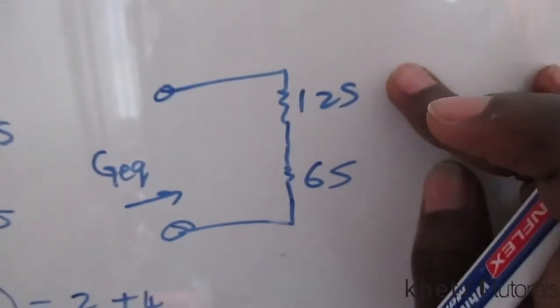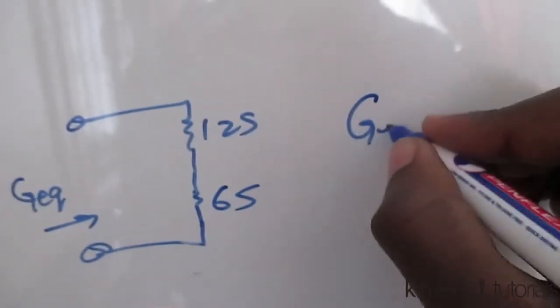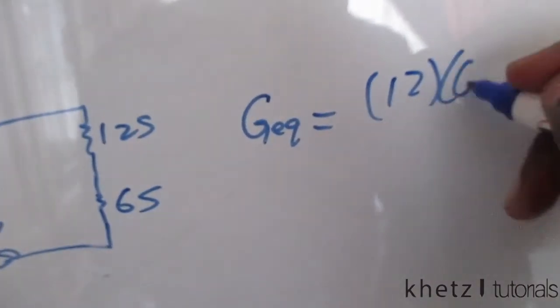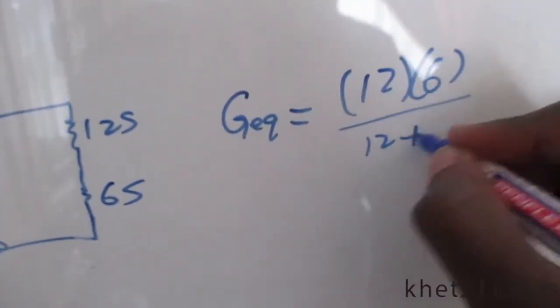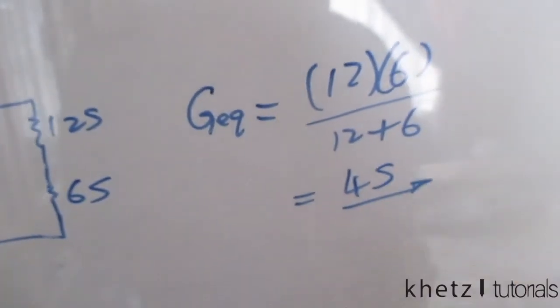So this is 12 Siemens in series with six Siemens. So G equivalent will be equals to 12 multiplied by six divided by 12 plus six, which is four Siemens. That is your answer.